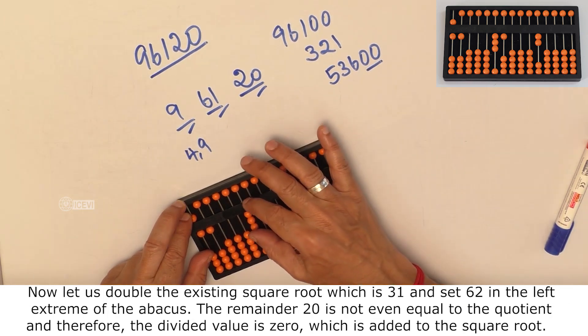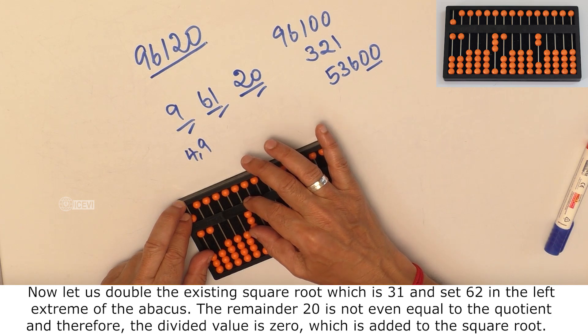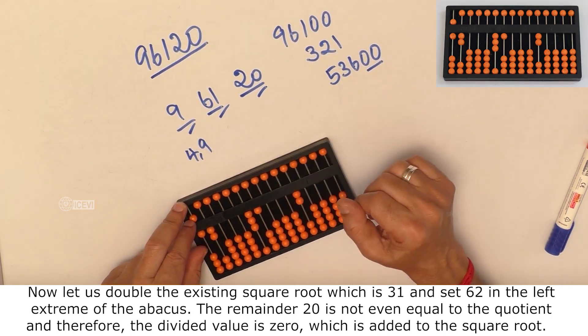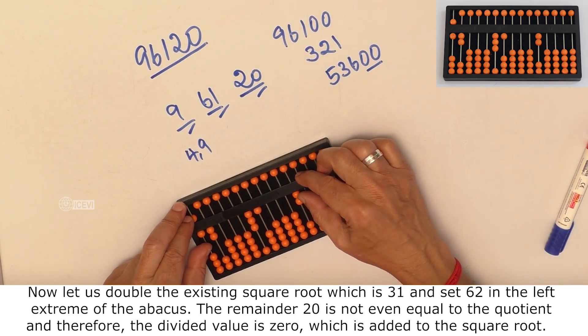Now, let us double the existing square root, which is 31, and set 62 in the left extreme of the abacus. The remainder 20 is not even equal to the quotient, and therefore,